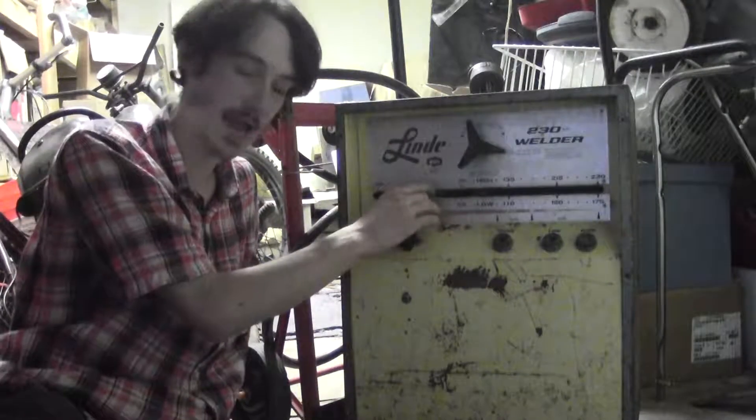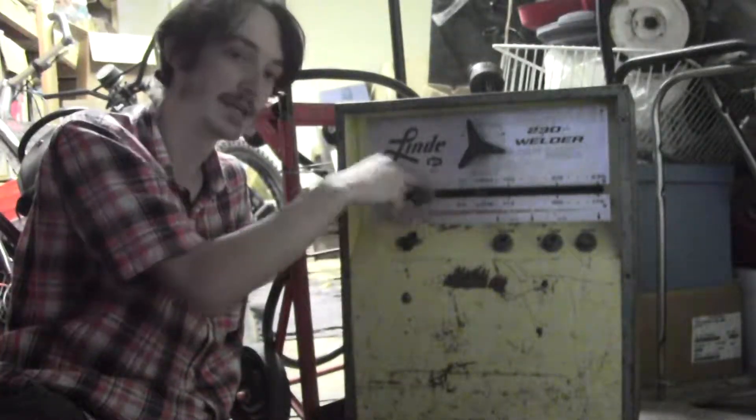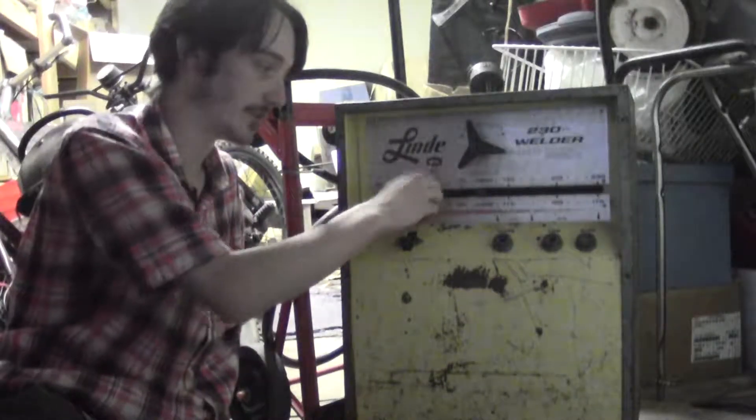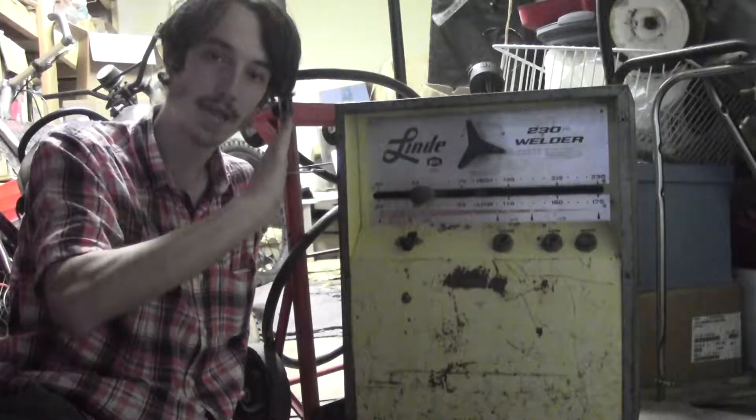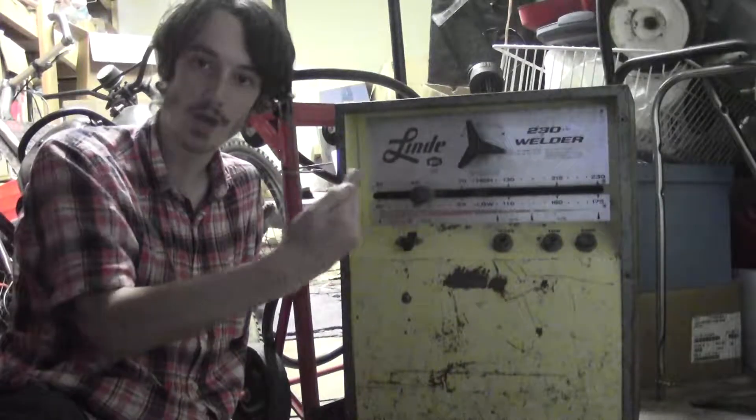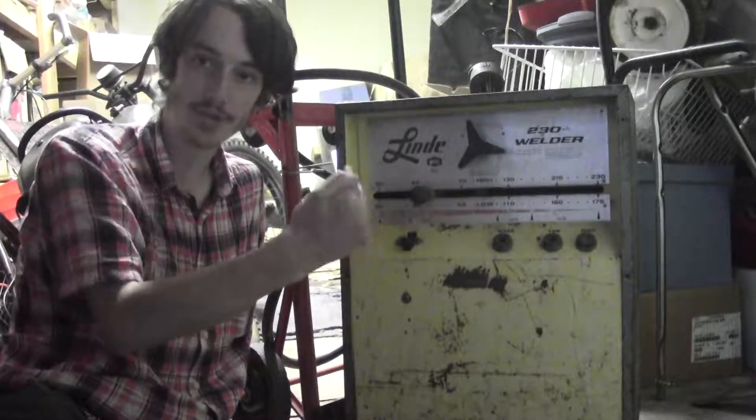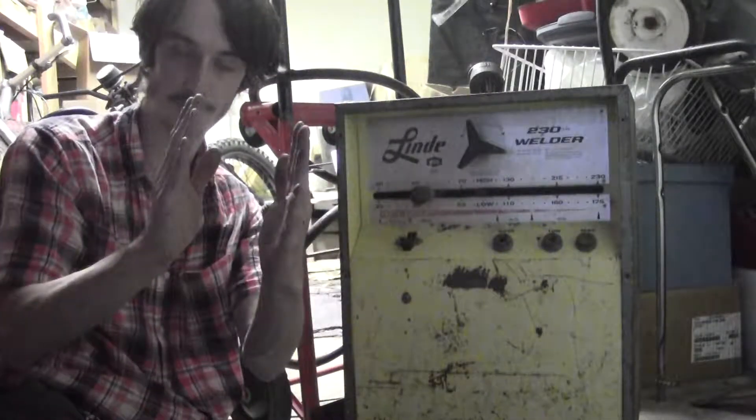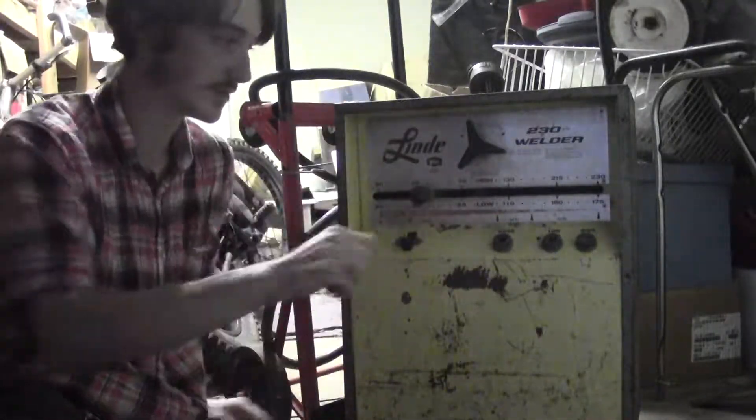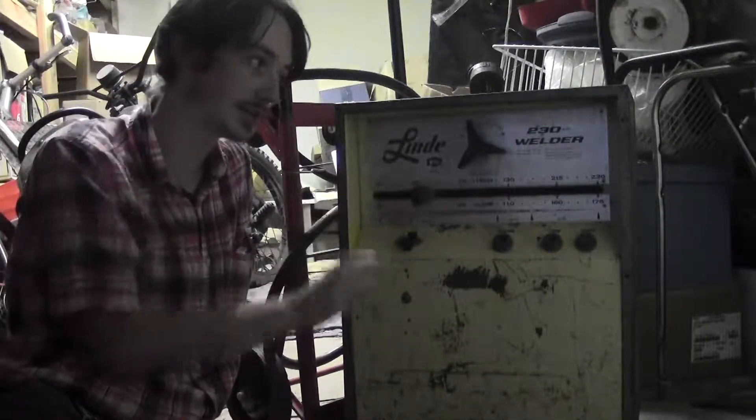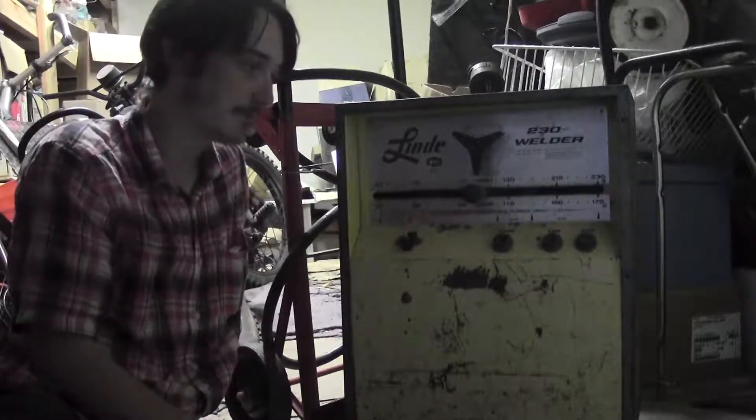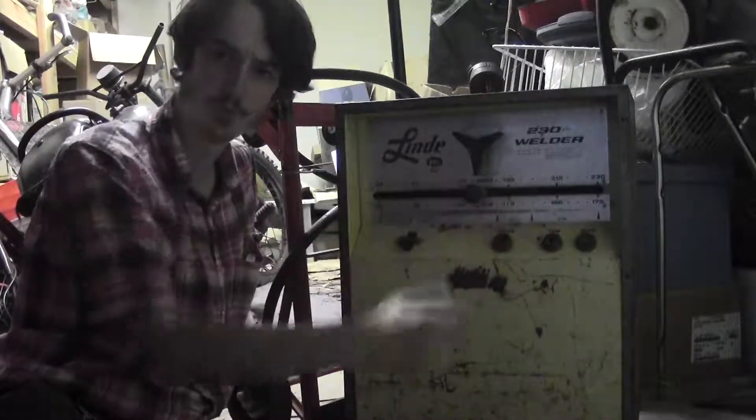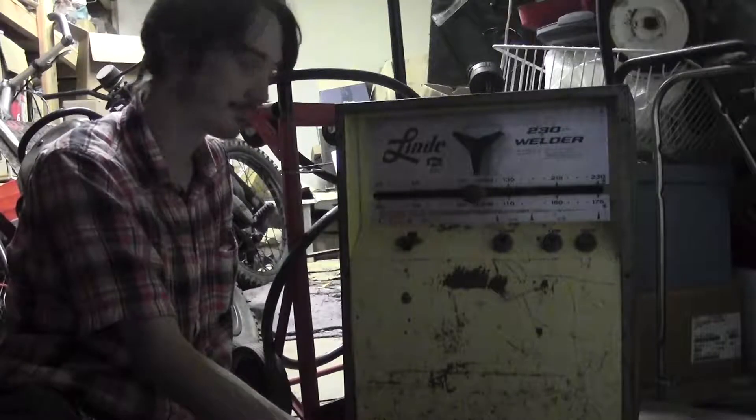I suspect this is a variac, a variable transformer. The primary has a constant number of windings, the secondary has a variable number. One side, say the hot, is just a singular winding, but the neutral is determined by a brush. There are windings with no insulating coating, and by moving this lever you move that brush across those windings and choose which secondary winding you're going to use as your other end. Between those two points you change the number of turns, the number of windings in the secondary. So it's a variable transformer, a variac. I think that's what this is. This is just a lock nut that you loosen to move that arm. You have your work and electrode, low and high, which I assume is just something simple with a transformer, dividing by two or something. Anyway, let's see what's inside.